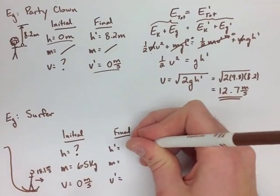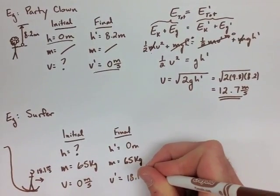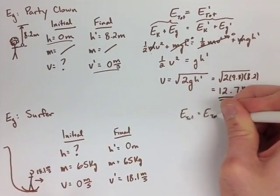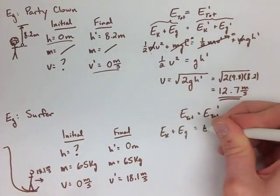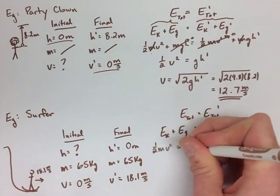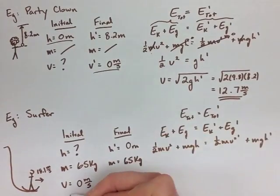We're going to use our energy equals energy. Again, we have kinetic energy and gravitational to start and kinetic energy and gravitational to finish. But, we know our initial velocity is zero and our final height is zero. So our initial kinetic energy and our final gravitational energy will both be zero in these cases.